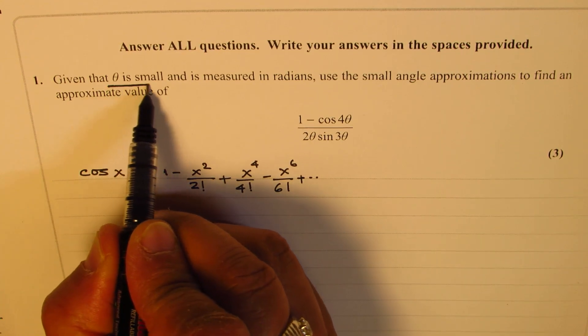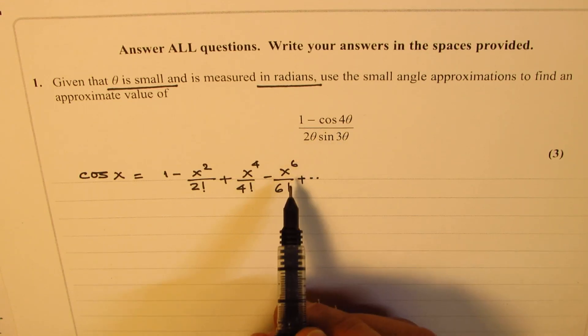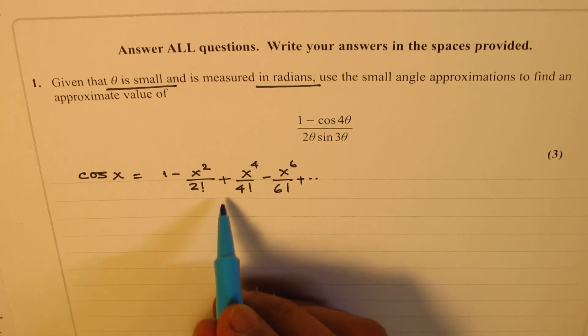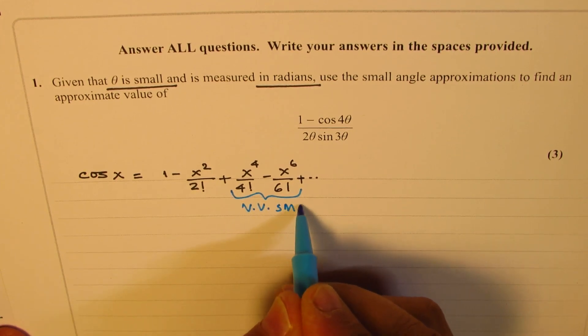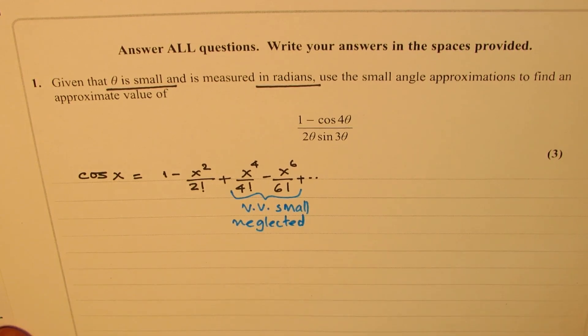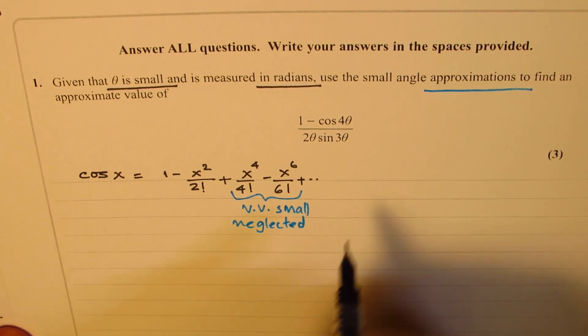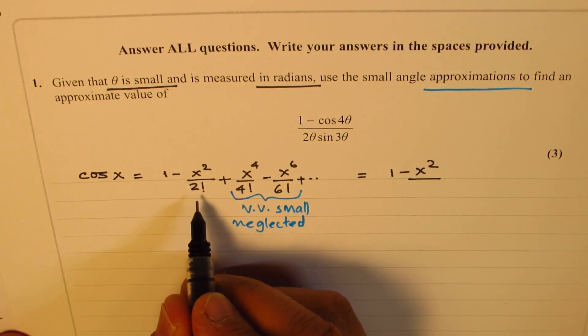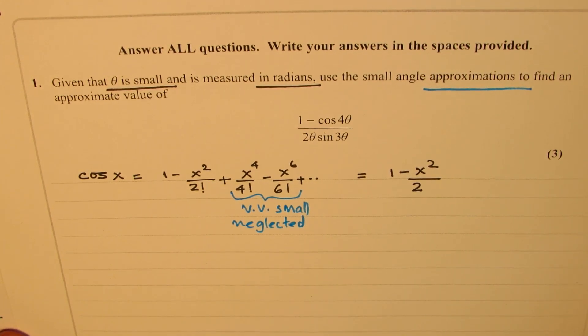Now, since we are saying theta is small and it is measured in radians, when it is small, that means the quantities which are like these quantities will be very, very small. So they can be neglected. And as an approximation, we could always write cos x as equal to 1 minus x squared by 2 factorial is 2 times 1. So x squared by 2. Is that clear to you?